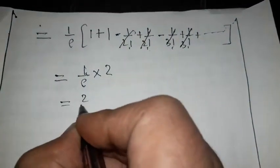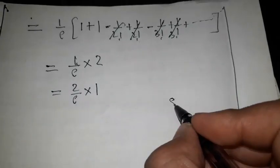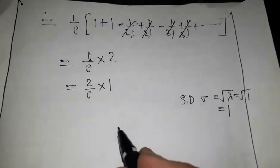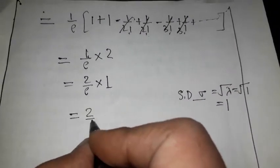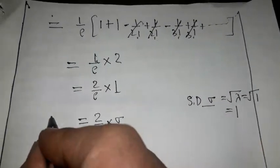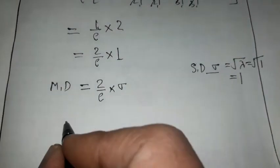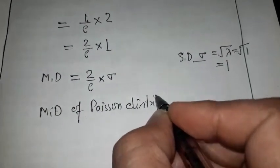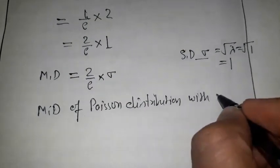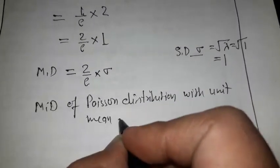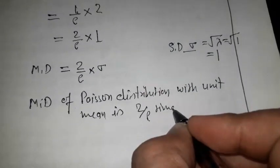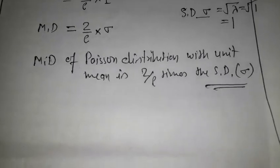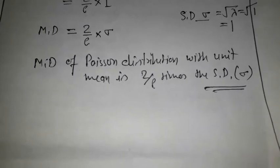This simplifies to 1 upon e into [1 + 1 minus 1 upon factorial 2 + 1 upon factorial 2 minus 1 upon factorial 3 + 1 upon factorial 3 ...], where consecutive terms cancel, leaving 1 plus 1 = 2. So the mean deviation equals 2 upon e. Since the standard deviation sigma = 1, we can write 1 as sigma, so the mean deviation equals 2 upon e times the standard deviation. Thus it is shown that the mean deviation of the Poisson distribution with unit mean is 2 upon e times the standard deviation.